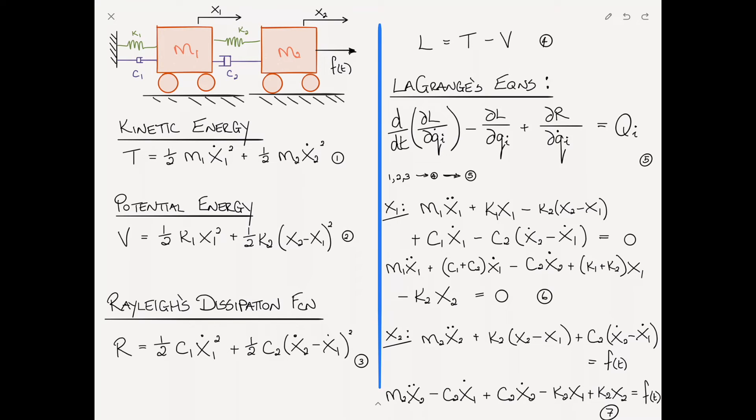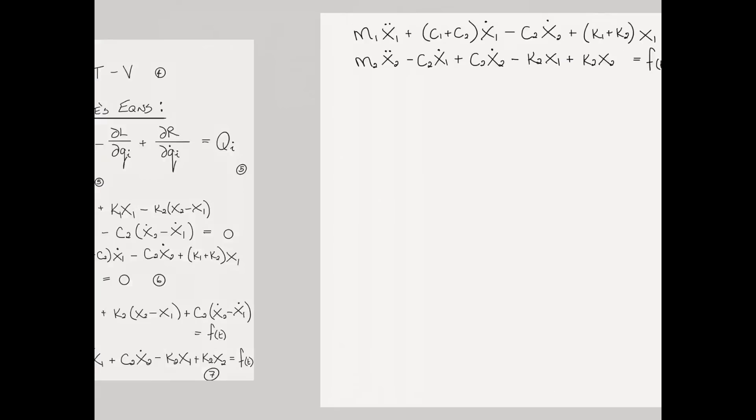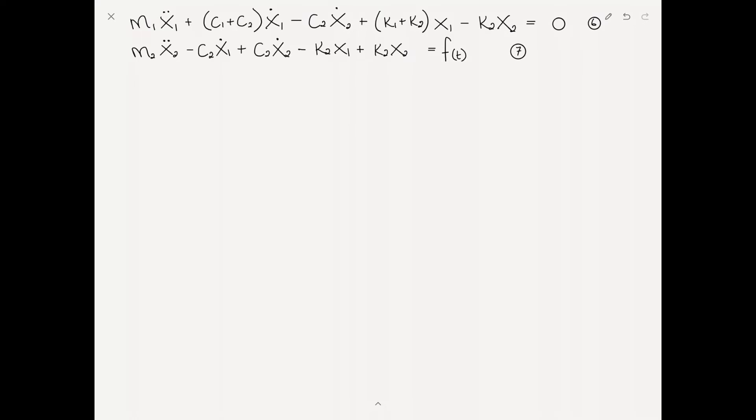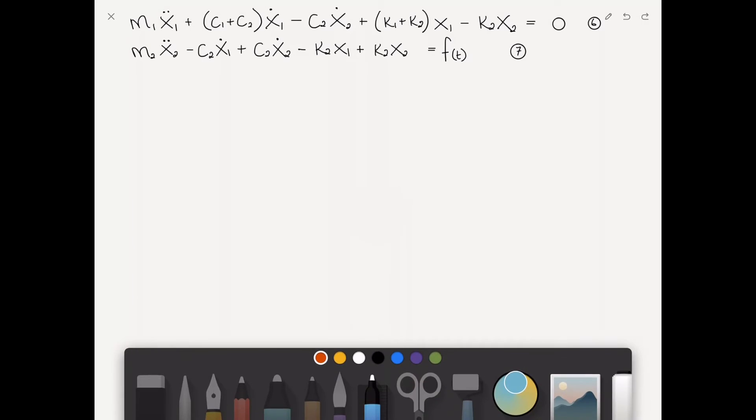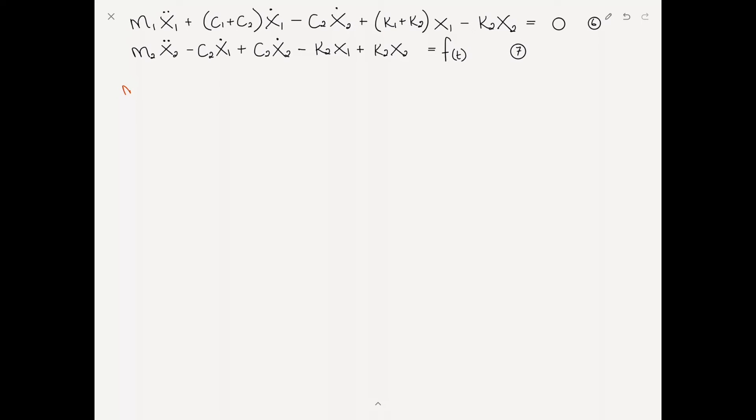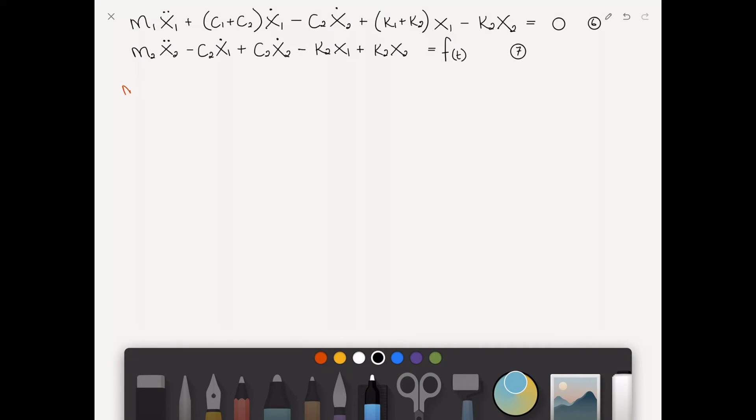At this stage we're done, but let's write it in matrix form. I've copied equations 6 and 7, now rewriting in matrix notation. The mass matrix: M1, 0, 0, M2 times the vector x1 double dot, x2 double dot.